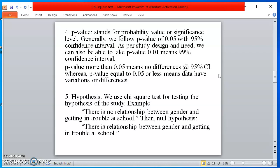Hypothesis. When we go with the chi-square test, we should have certain hypotheses. Here I am citing one example of hypothesis: there is no relationship between gender and getting in trouble at school. This is our study hypothesis.